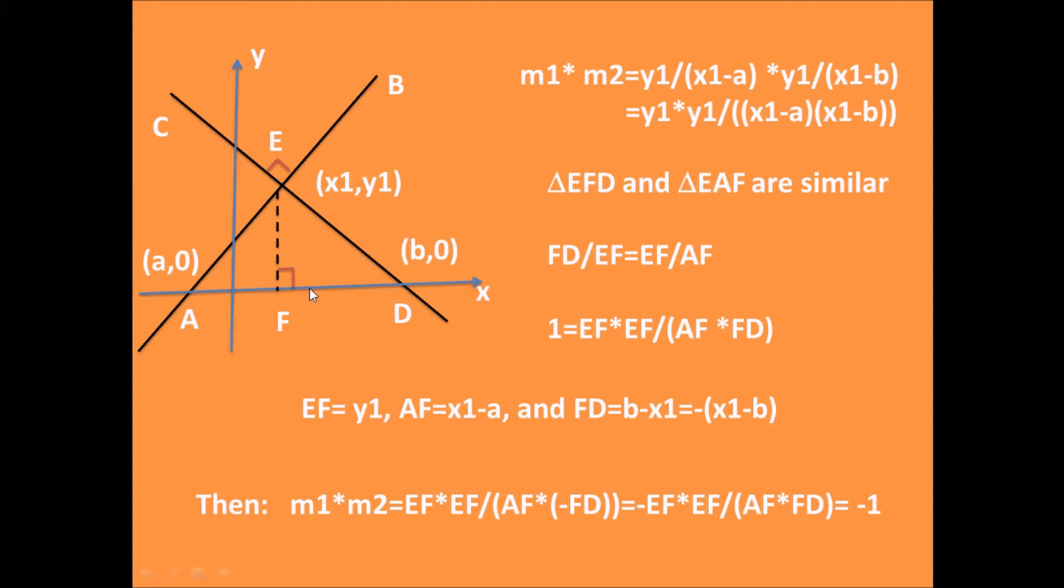Since these two right triangles are similar, and when two triangles are similar the ratio of corresponding sides is the same, we get FD/EF = EF/AF. After some rearrangement,